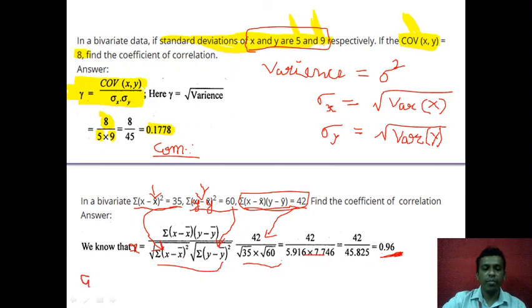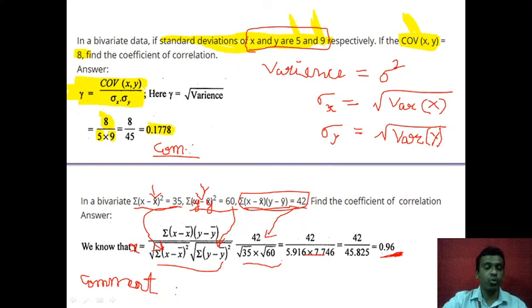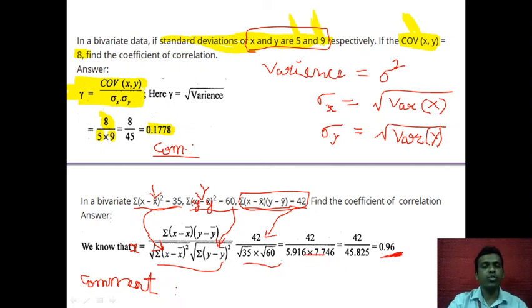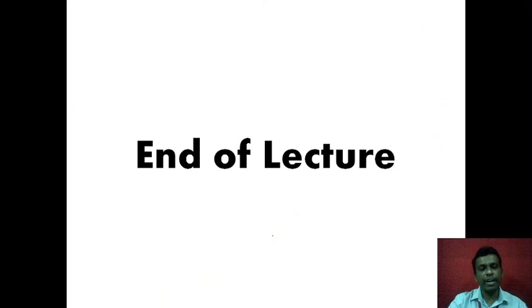Dividing, you get r = 0.96. The comment: since the value is positive and very close to 1, it shows a very high degree of positive correlation. These were smaller problems — the only thing you should be careful about is to know these formulas by heart, because once you know them, the problems are mainly substitution. With this, we end today's lecture.